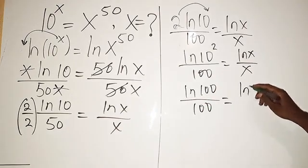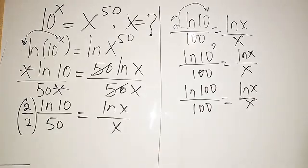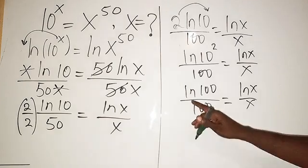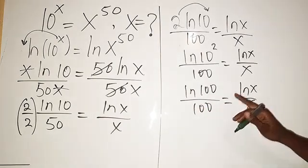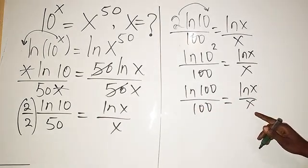I've been missing saying ln, I'm very sorry about that. So ln of 100 divided by 100 equals ln of x over x.